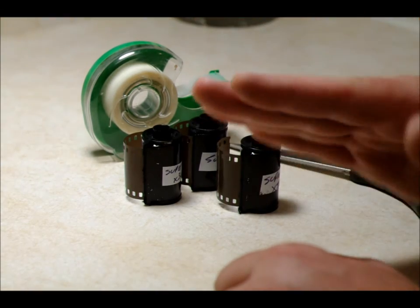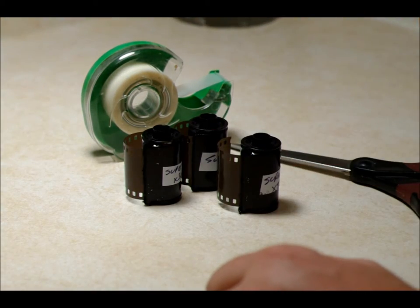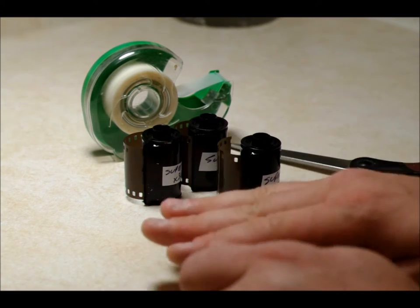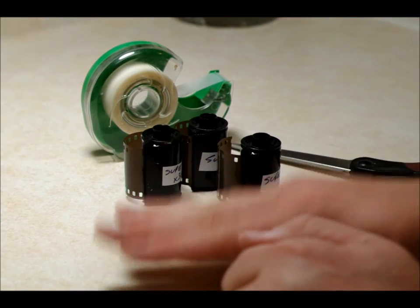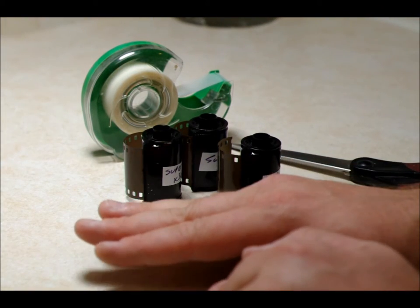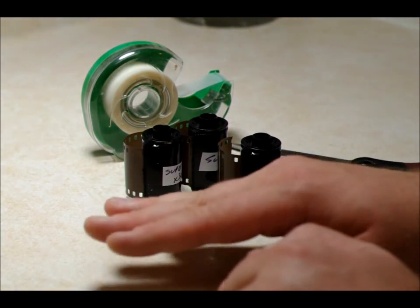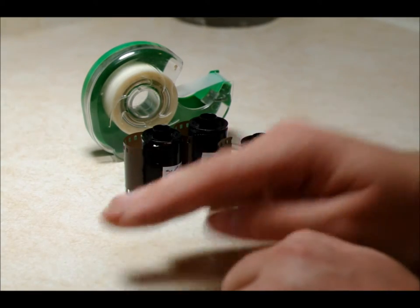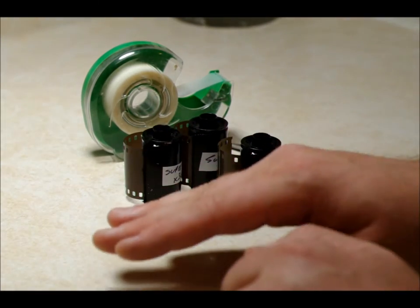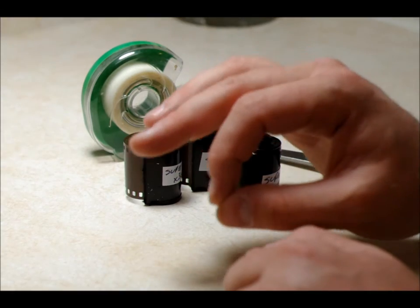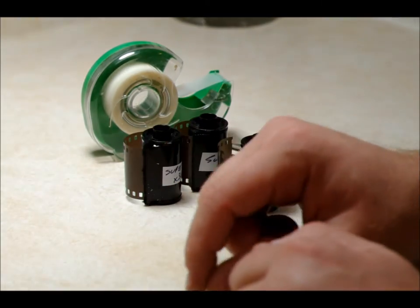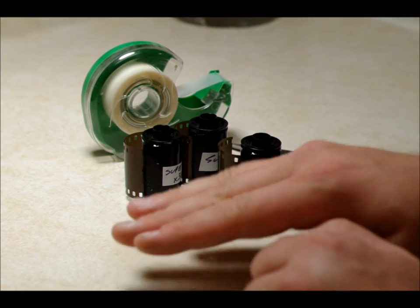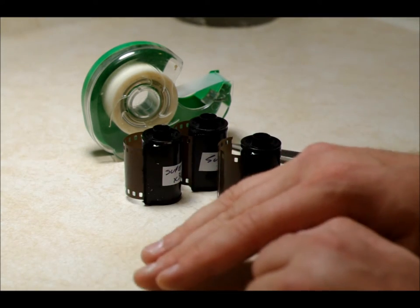And the reason for that is because you have three layers of emulsion with color film. Red, another one, and another one. Red's on the back next to the film base when it's loaded properly. And I think it's red, green, and blue are the three layers. So yeah, I should have researched that before I said anything.